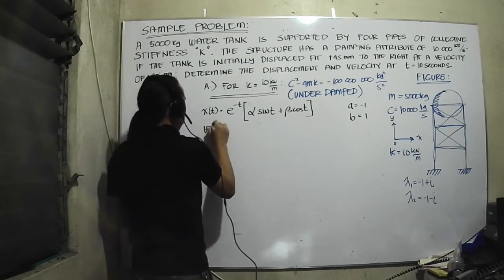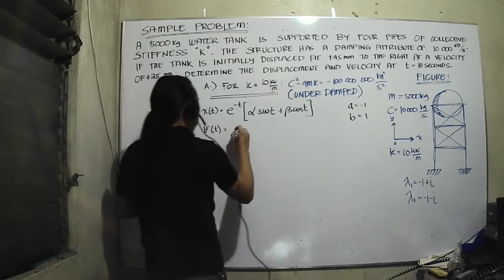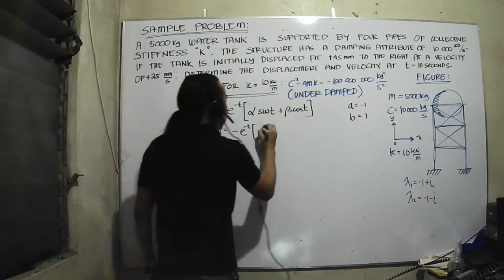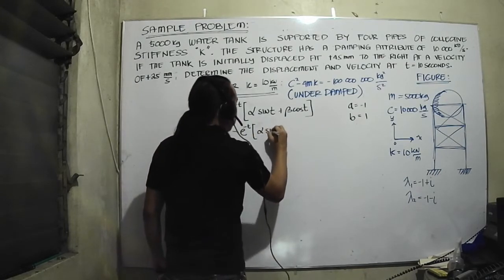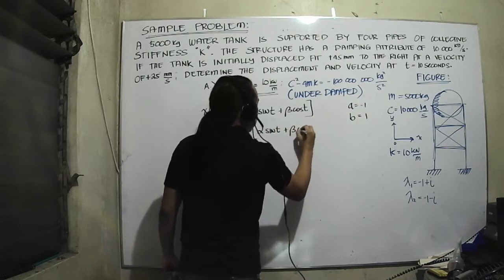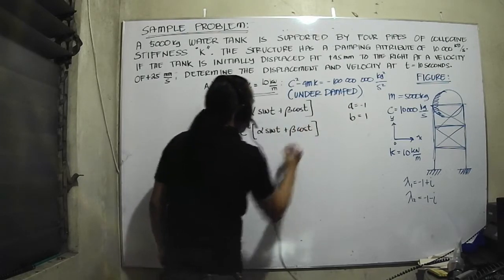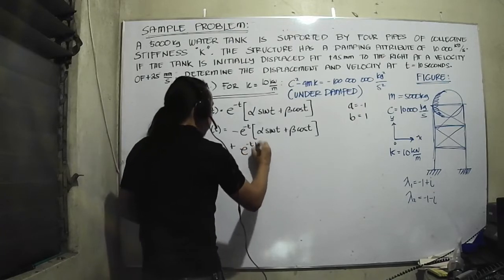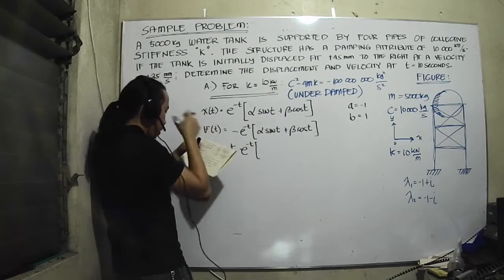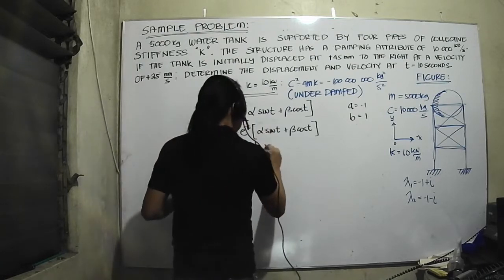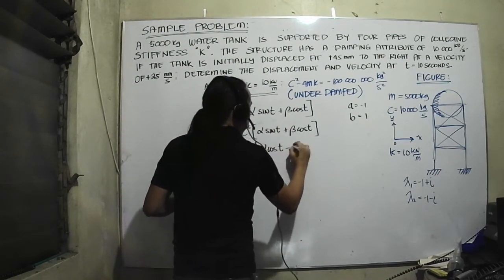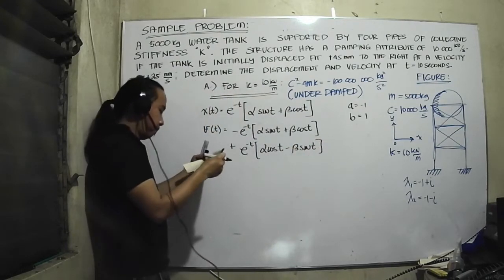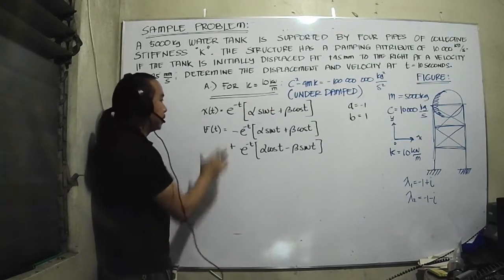Differentiating this, I will have negative e to the negative t times alpha sin t plus beta cos t, plus e to the negative t times alpha cos t minus beta sin t.